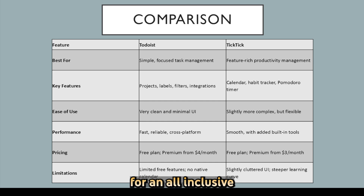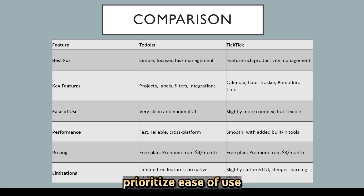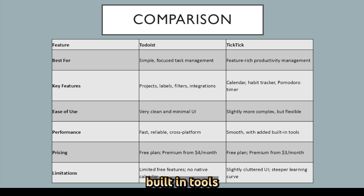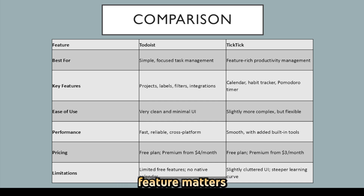But if you're looking for an all-inclusive productivity suite, TickTick might be the way to go. The verdict is: if you prioritize ease-of-use and a distraction-free experience, Todoist is a great choice. If you want more built-in tools to track habits and manage time, TickTick could be a better fit. Both apps are powerful — it just depends on what features matter most to you.